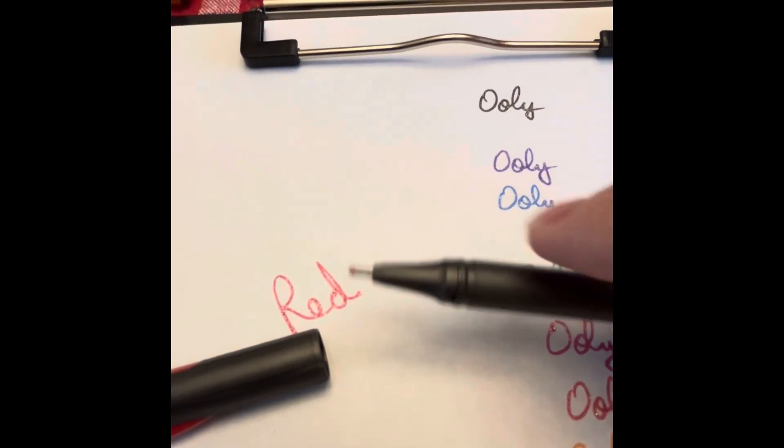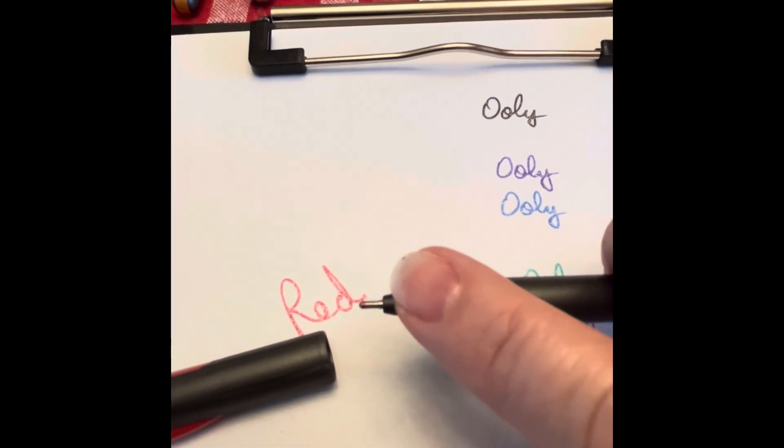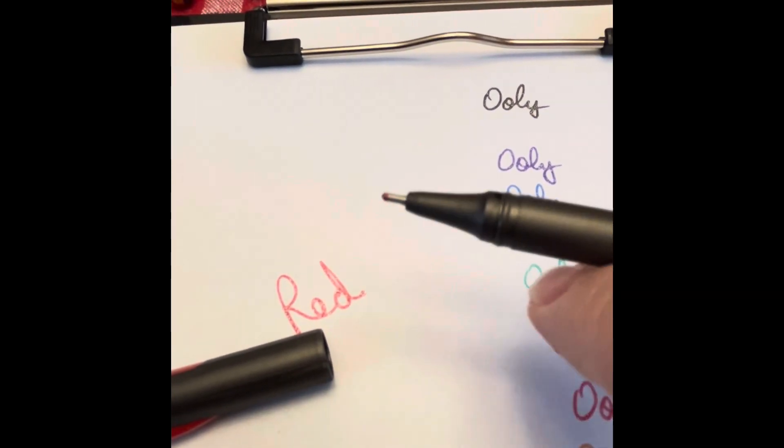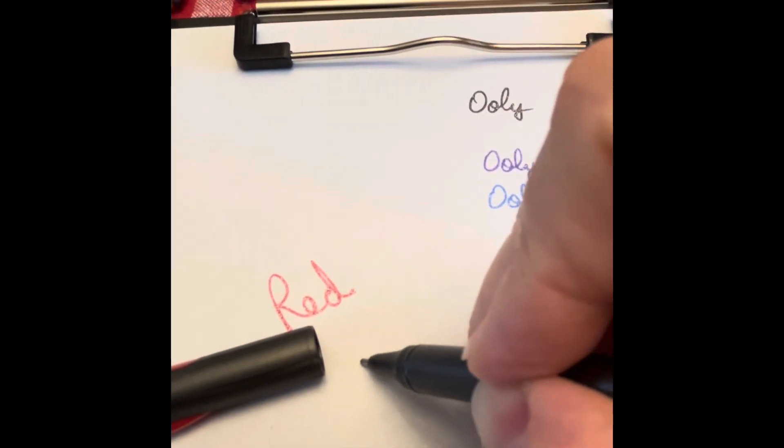Now just for reference I'll go back to the Pentonic. It does have also a one millimeter tip and it is a little bit different shaped and I'm going to show you how the Pentonic writes.